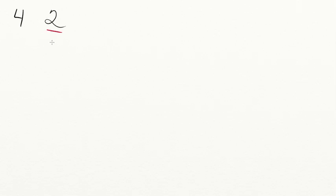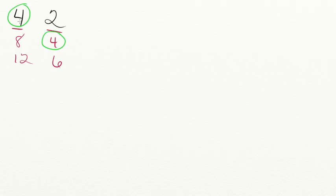Let's practice a few problems together. Can you find the least common multiple for the numbers four and two? When dealing with smaller numbers like four and two, it's simple to just list out their multiples. Multiples of two: two, four, six, and so forth. Multiples of four: four, eight, twelve — but we don't need to go further. Four is a multiple of itself, and four is also a multiple of two. So the least common multiple for four and two is four.